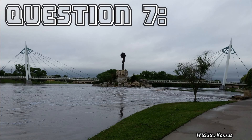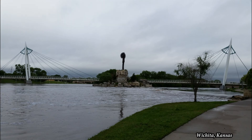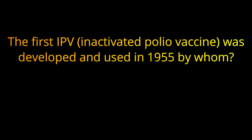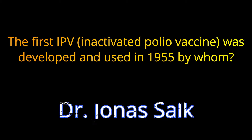Question 7. The first IPV, or inactivated polio vaccine, was developed and used in 1955 by whom? The answer is Dr. Jonas Salk.